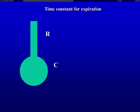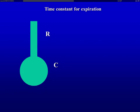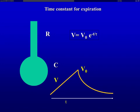The respiratory system can be characterized by its mechanical time constant, which depends on resistance and compliance. With such a system, expiration follows a mono-exponential curve. At the bedside, multiplying resistance by compliance gives you the time constant in seconds. We need at least three time constants to expire more than 95% of the inspired volume. For any patient, if the expiratory time is shorter than three time constants, you will create intrinsic PEEP.